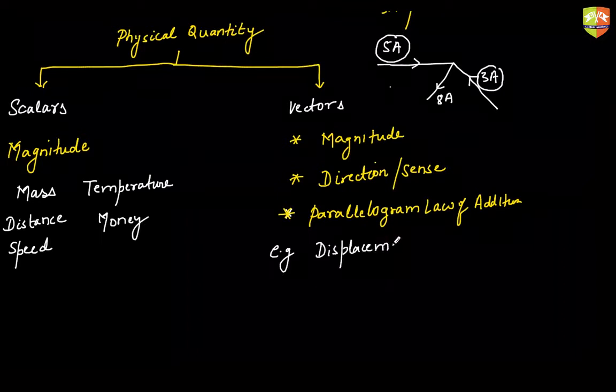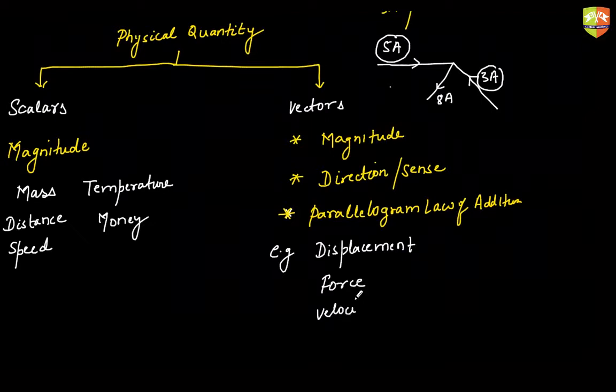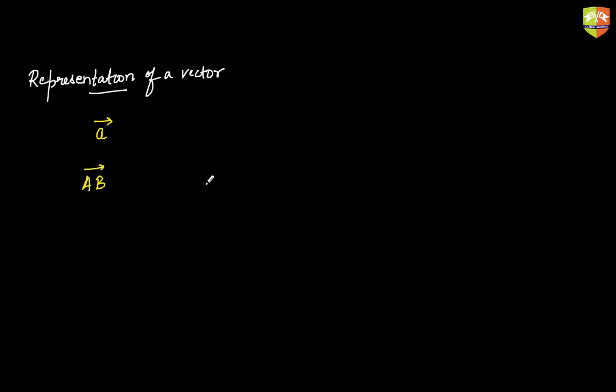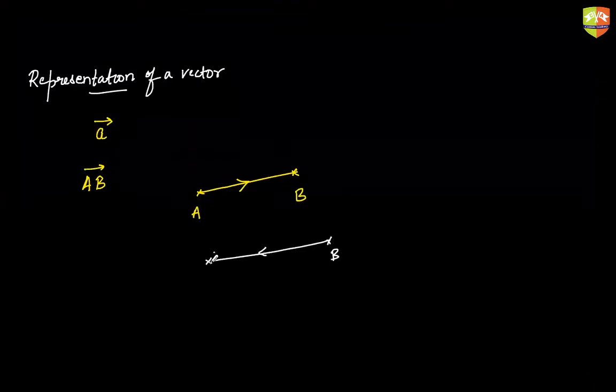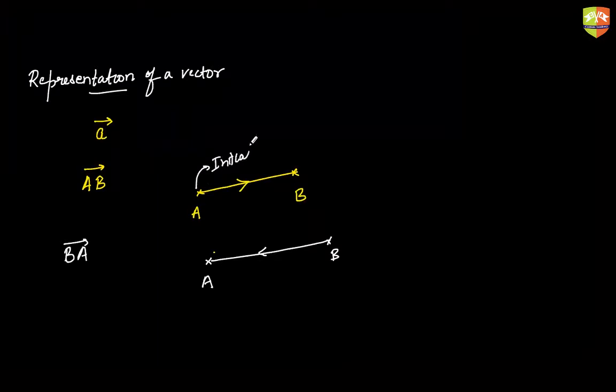Examples of vector quantities include displacement, force, and velocity. A vector is represented by a small alphabet with an arrow on top, or in bold in books. You can also state a vector by its initial and terminal position. If a vector starts from A and ends at B with sense from A to B, it is called vector AB. If the sense is from B to A, it's called vector BA, where B is the initial point and A is the terminal point.